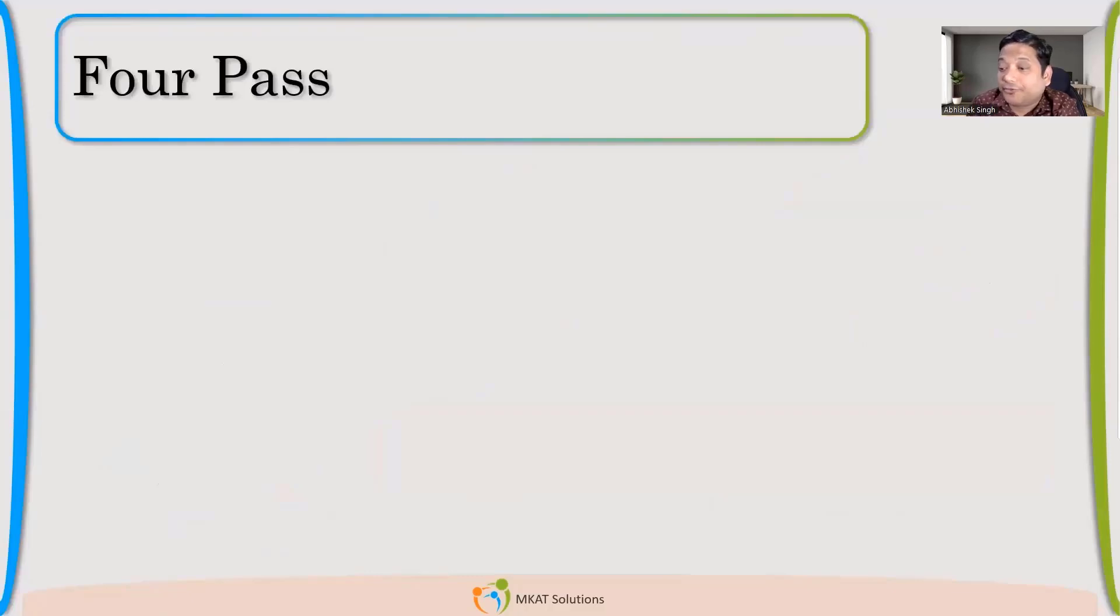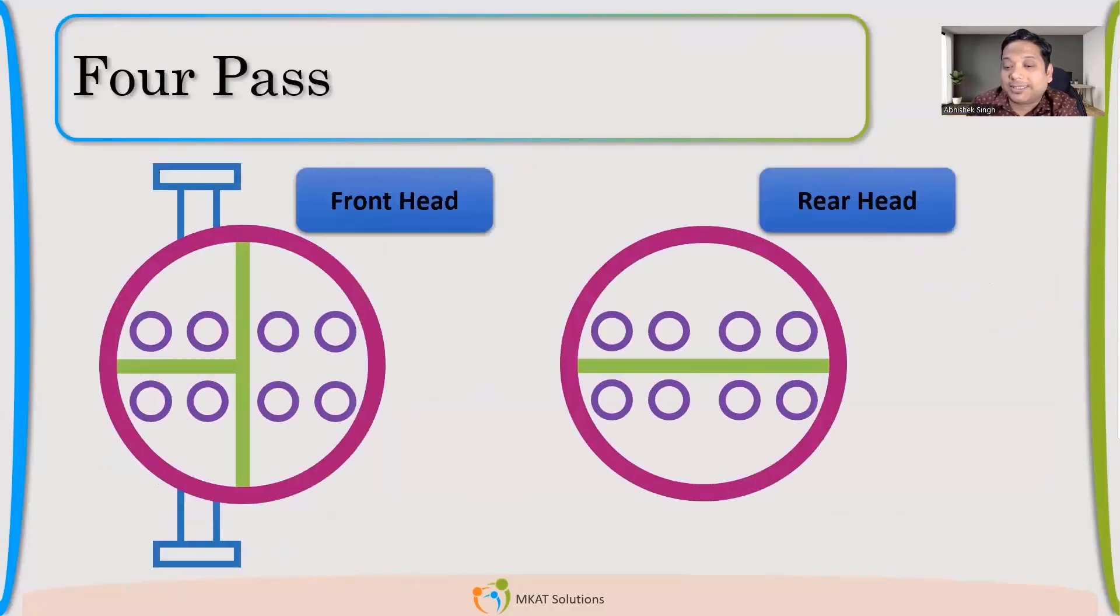Now, what about four pass? If I have a four pass heat exchanger. How the division I'll make in the tube sheet. There is front tube sheet and rear end tube sheet. You can see the flow is coming like this, entering in the two tubes, which are available because of partition plate, other tubes are not available for the inlet. So all flow will enter in these two tubes. It will come out from these tubes on the other side of tube sheet. So one pass happened.